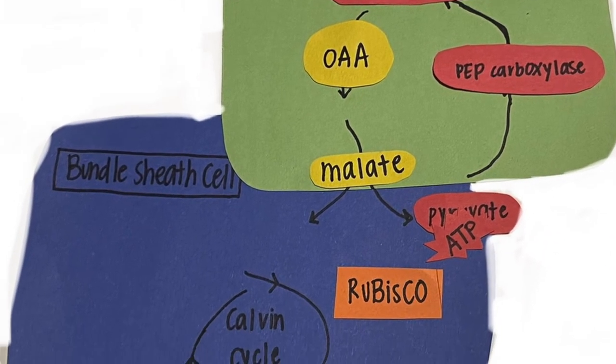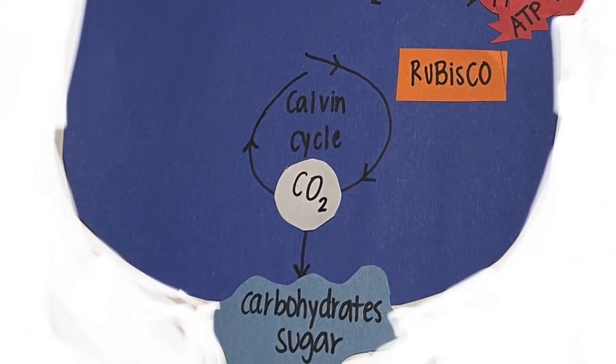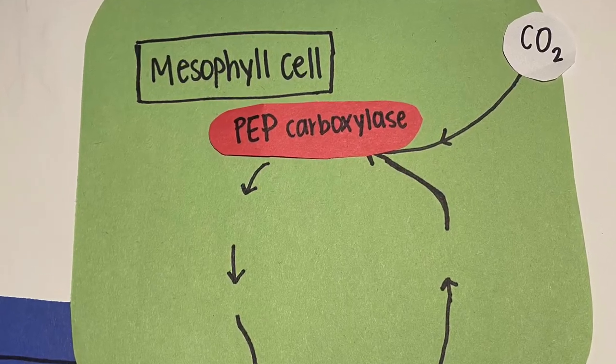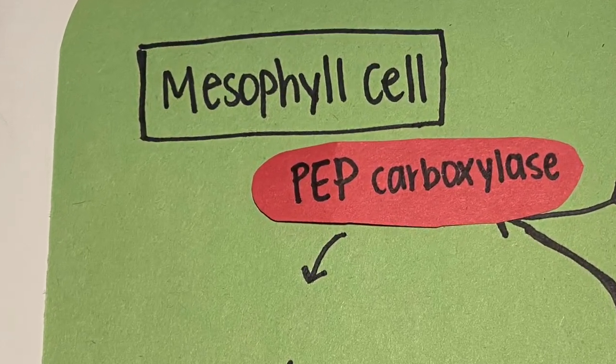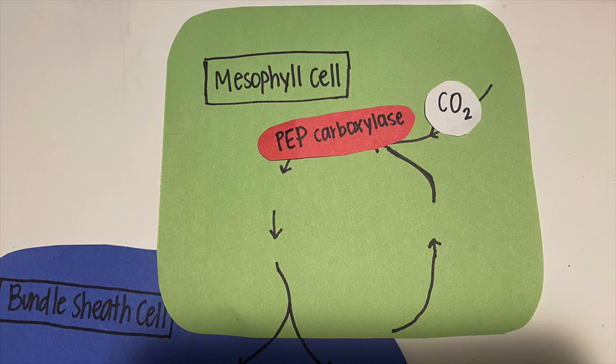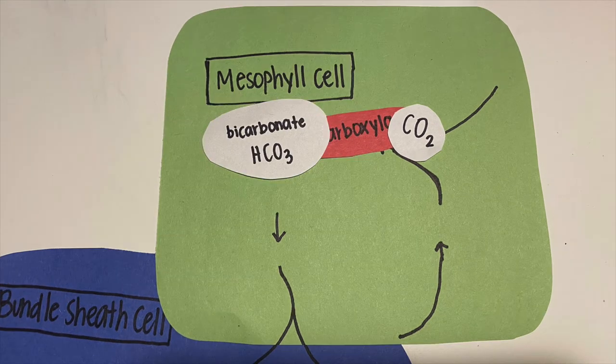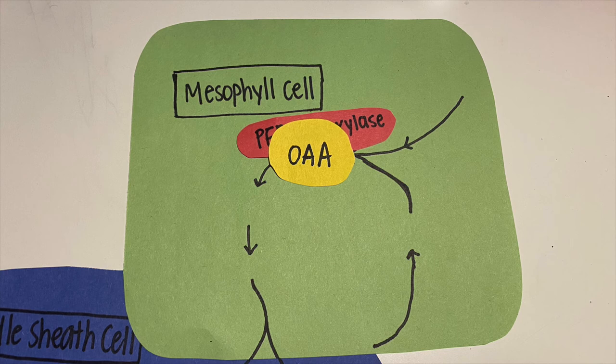Let's look at how C4 plants go through the Calvin cycle. Like C3 plants, initial carbon fixation occurs in the mesophyll cells. However, in C4 plants, PEP carboxylase binds carbon dioxide and bicarbonate to form a 4-carbon organic acid, OAA.